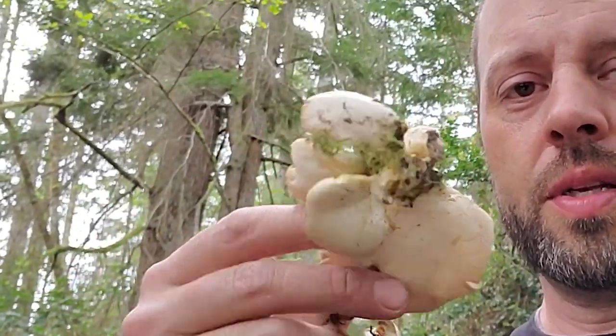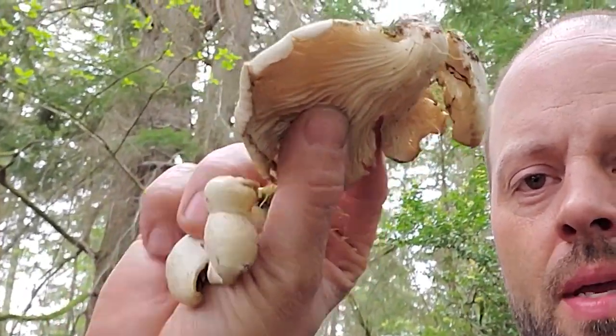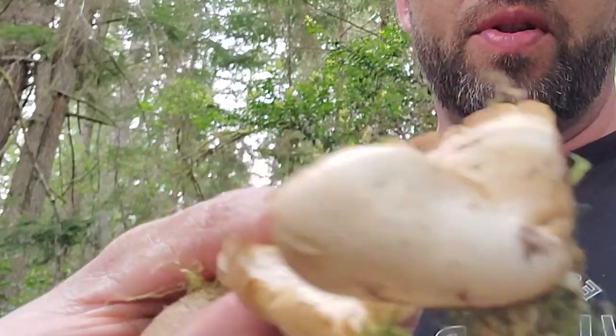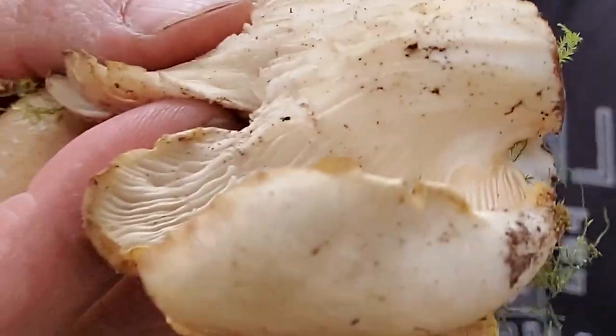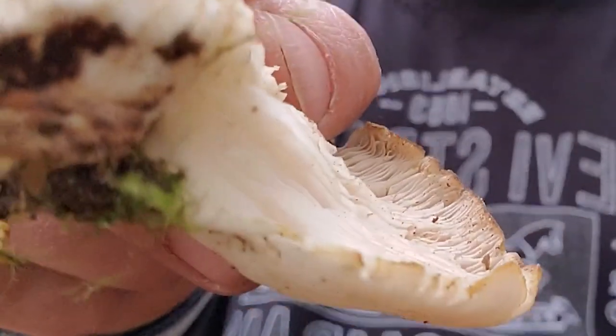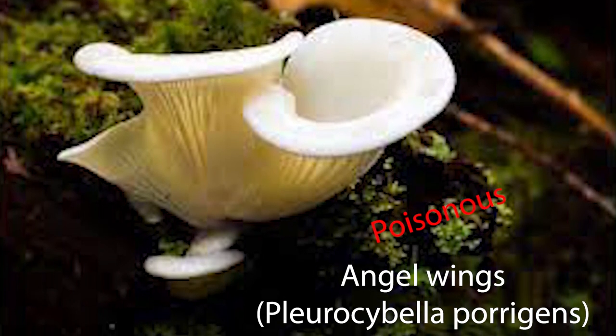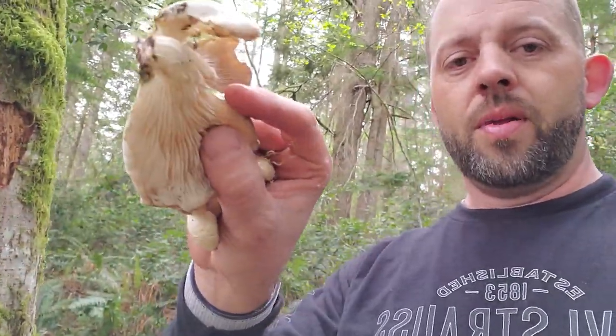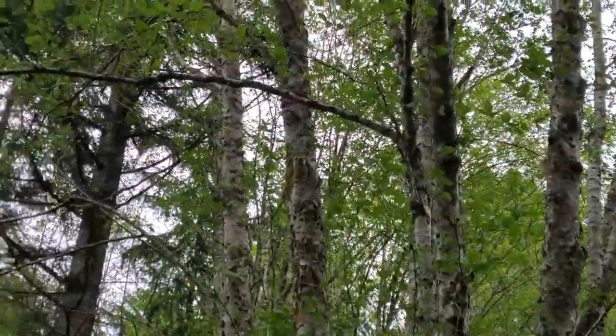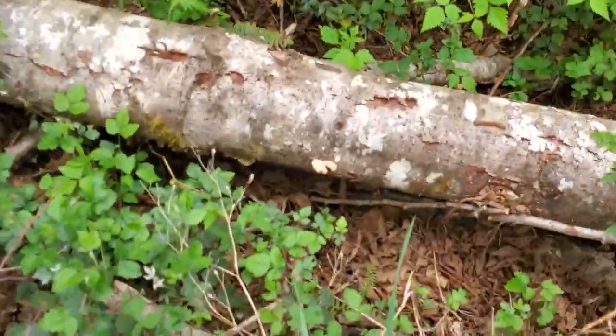There are not too many edible wild mushrooms growing in the Northwest in spring, but Pleurotus oyster mushrooms are one you can find if you look. The gills run completely down to the base of the mushroom and there is no stem — that's a pretty easy identifier. If you're worried about angel wings, those only grow in autumn on coniferous trees. So if it's springtime and a hardwood like this alder, you can pretty much bet these are oyster mushrooms.